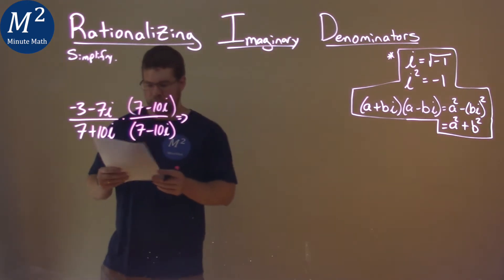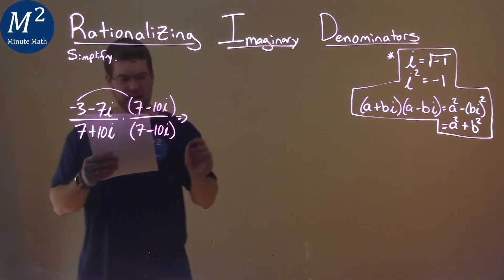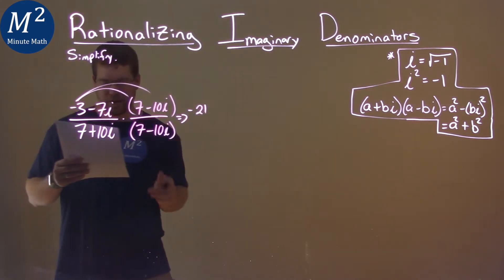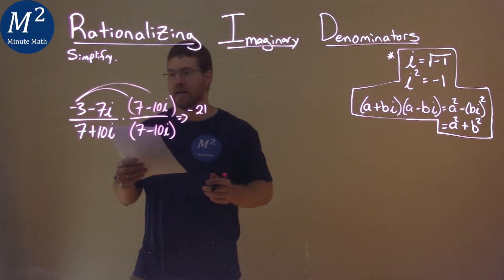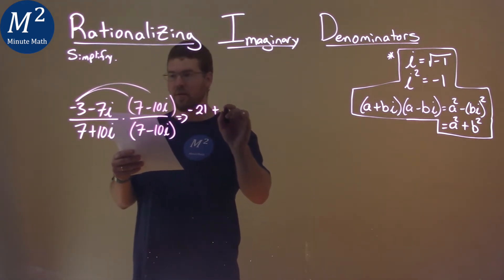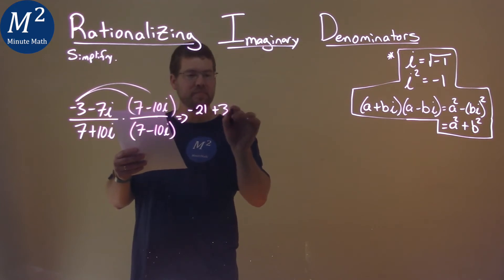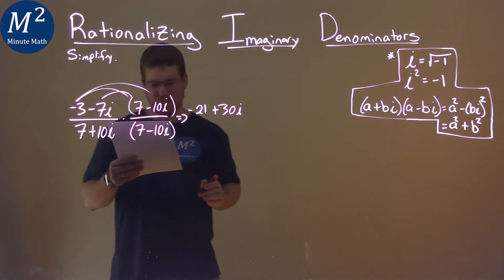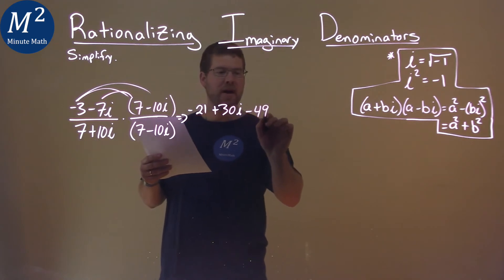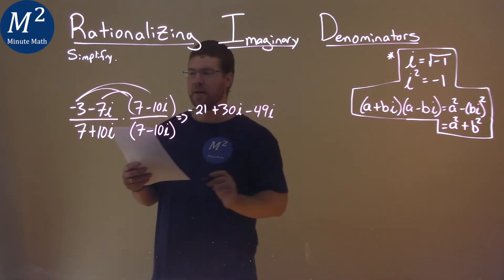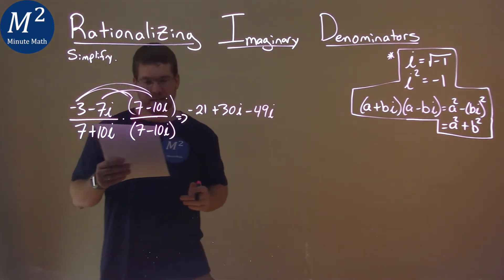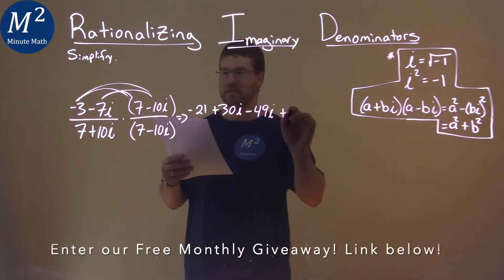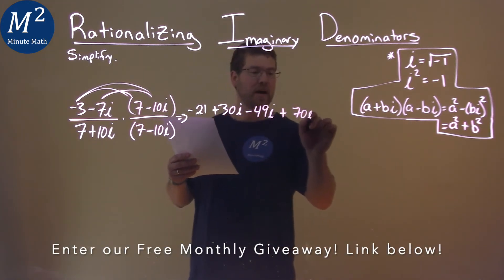So let's multiply this out. Negative 3 times 7 is negative 21. Negative 3 times negative 10i is a positive 30i. Negative 7i times 7 is a minus 49i. And negative 7i times negative 10i is a positive 70i squared.